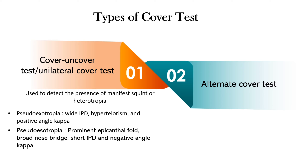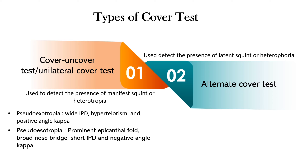The alternate cover test is used to detect the presence of heterophoria and is performed after the cover-uncover test. We will see the procedure for both one by one, but before that, let's cover the target to be used and some important points to note before the procedure.